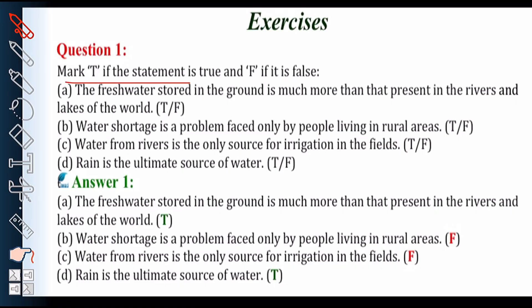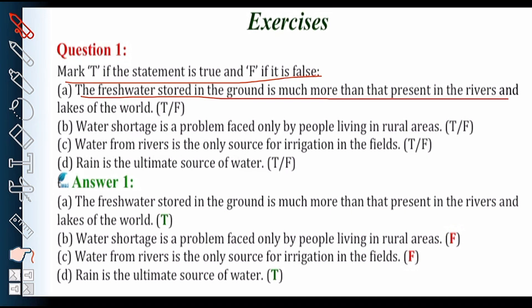Let's see question number 1. Mark T if the statement is true and F if the statement is false. First statement: the fresh water stored in the ground is much more than that present in the rivers and lakes of the world. The water quantity stored underground is much more than that present in rivers and lakes combined. So the given statement is absolutely correct.